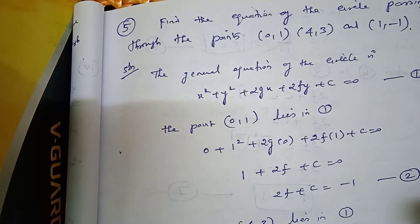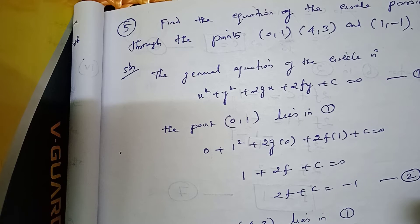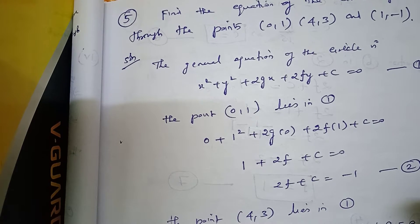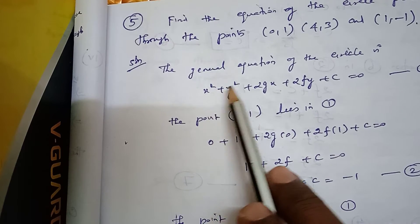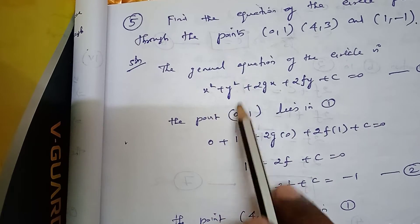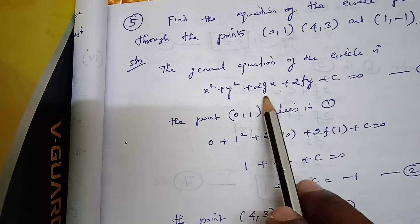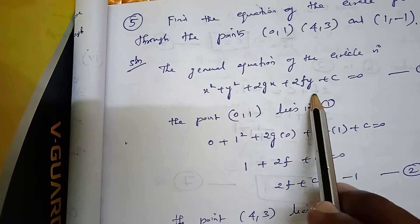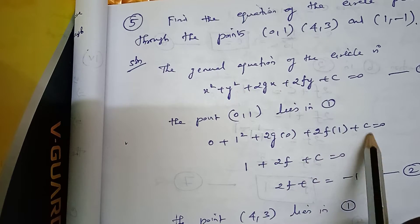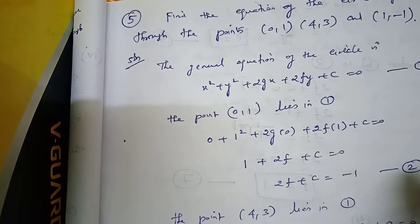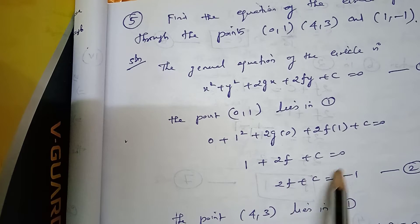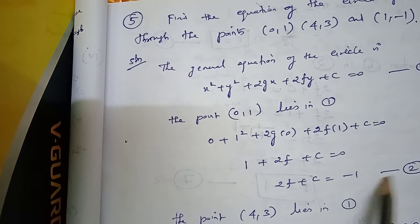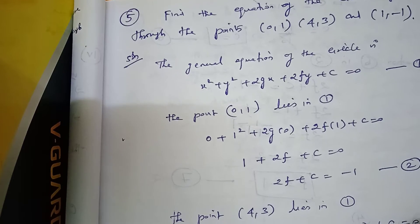The first point (0, 1) is applied in equation number 1. Put x = 0 and y = 1: 0² + 1² + 2g(0) + 2f(1) + c = 0, giving 1 + 2f + c = 0. So 2f + c = -1, which is equation number 2.